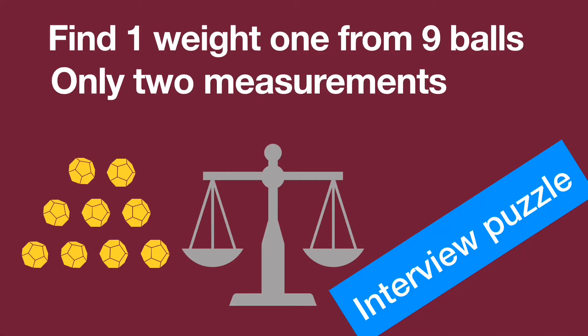Hello, this is an interesting interview puzzle. You are given a two-arm balance scale and nine identical-looking balls. One ball is heavier than the rest of the eight balls, which all are of equal weight. You have to find out the heavier ball by using the two-arm balance scale within two measurements.